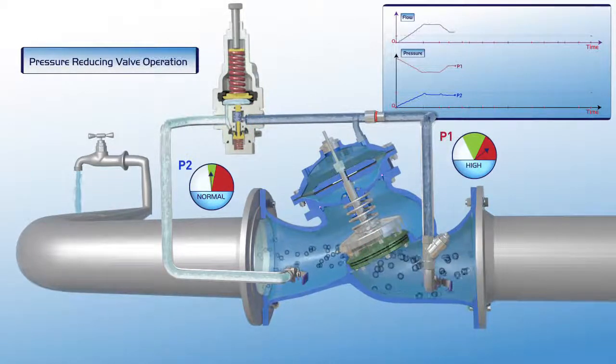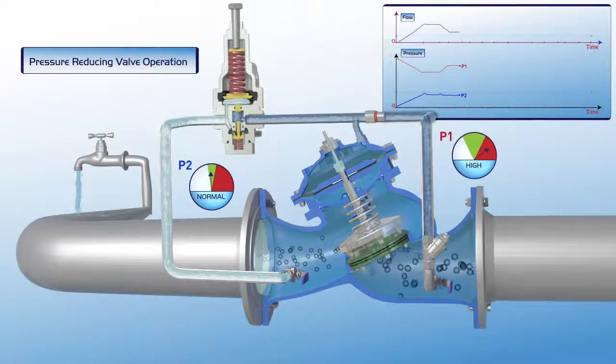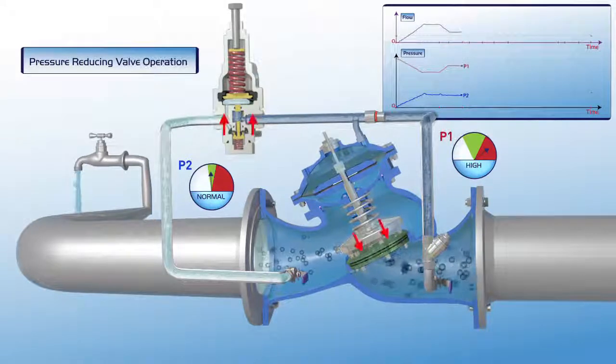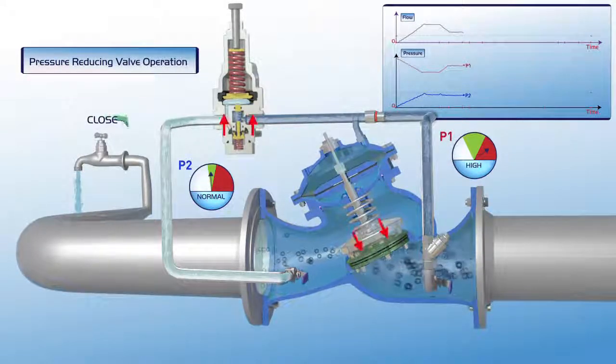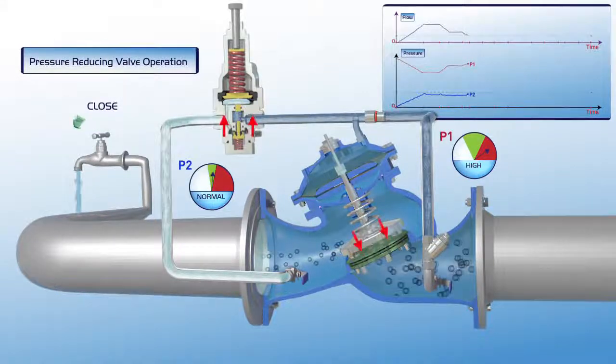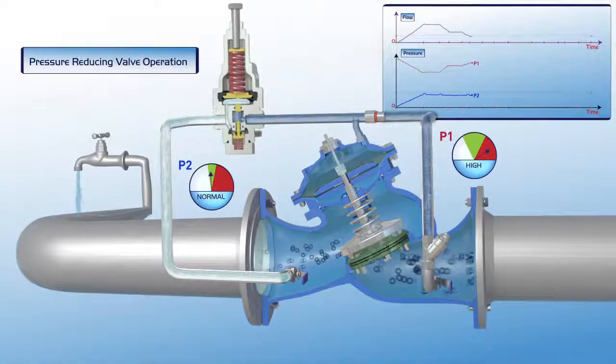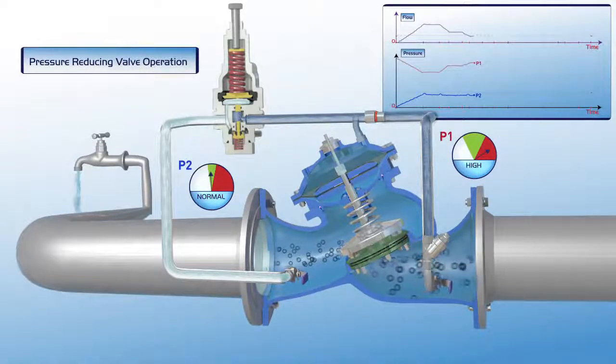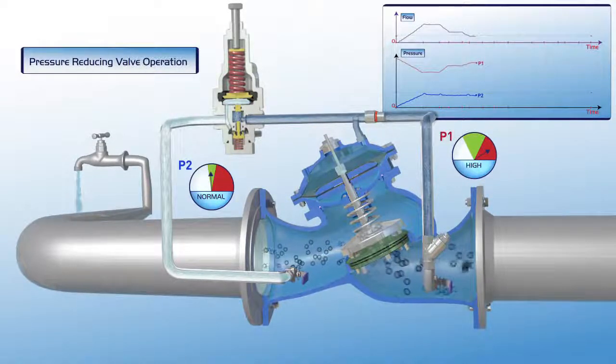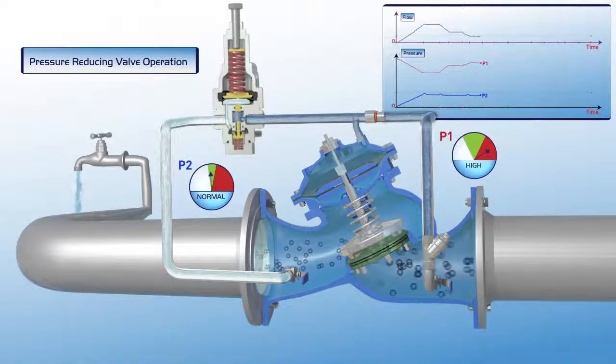As shown on the chart, the downstream P2 pressure line remains stable during a drop in the flow, while the P1 upstream pressure increases. Additional reduction in consumer demand results in additional increase of the P1 upstream pressure and further reduction of the system's flow. Note that the downstream P2 pressure remains stable at its green zone settings during this entire process.